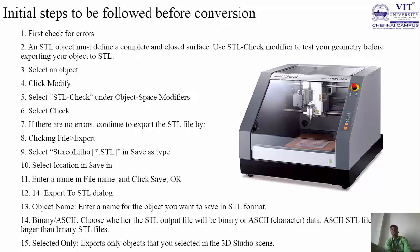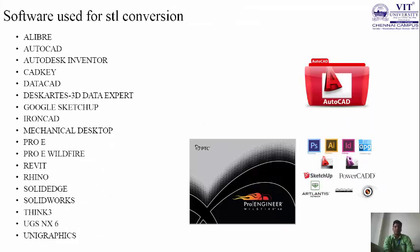These are the initial steps before conversion from the CAD file. Softwares that can be used to convert the CAD file to STL include: Alibre, AutoCAD, DataCAD, ProE, ProE Wildfire, and SolidWorks — likewise as I mentioned in the PPT, there are this many types.